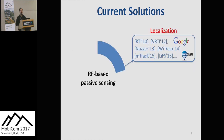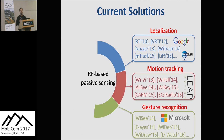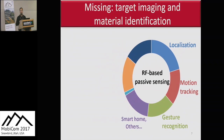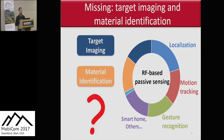Many research works have been published in this area, including localization, motion tracking, gesture recognition, smart home, and so on. Although with good success, an important missing component is using cheap commodity RF devices to perform target image and material identification. Perhaps you have read a lot of papers about localization and gesture recognition in Ubicomp, SigComm, and other conferences, but you may not have read any paper about target image and material identification.